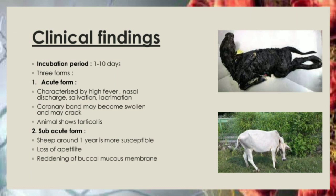The acute form is characterized by a high rise of temperature, nasal discharge, salivation, and lacrimation. There is drooling of saliva and swelling of the gum, tongue, and lips. The animal may show torticollis. There is a cyanotic and bluish appearance of the tongue.